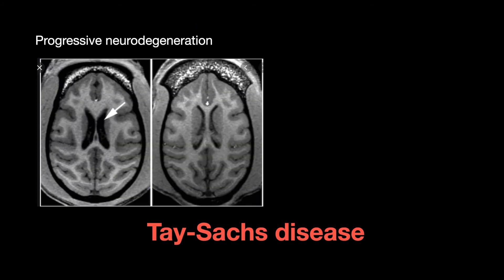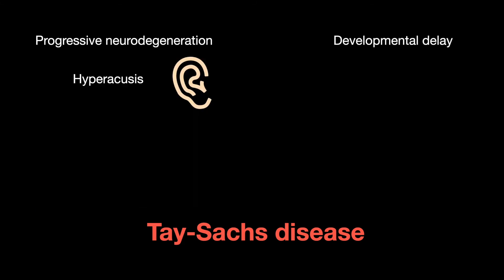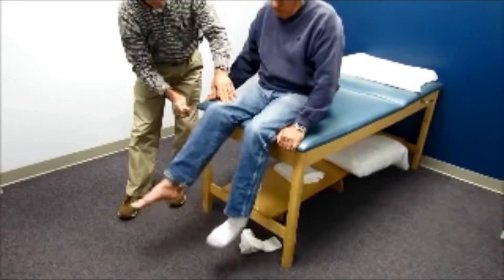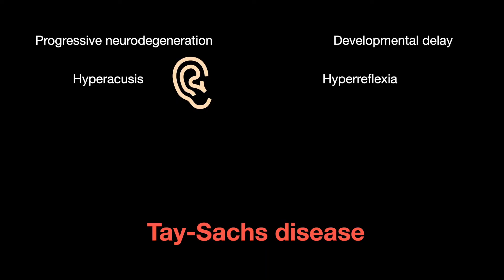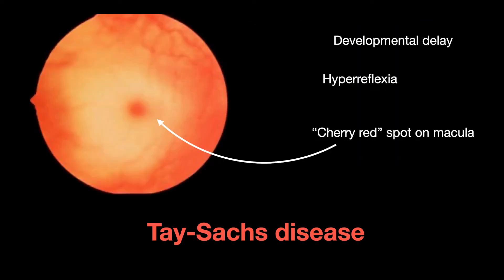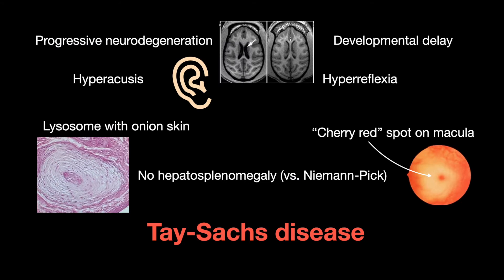The symptoms of Tay-Sachs disease are progressive neurodegeneration, developmental delay, hyperacusis (sensitivity to sound), hyperreflexia (overreactivity of the reflexes), lysosomes with onion skin appearance, a cherry red spot on the macula, and no hepatosplenomegaly, which you will see in Niemann-Pick.